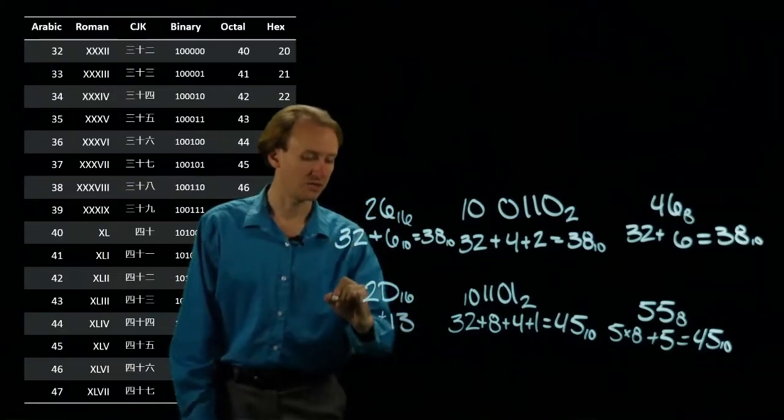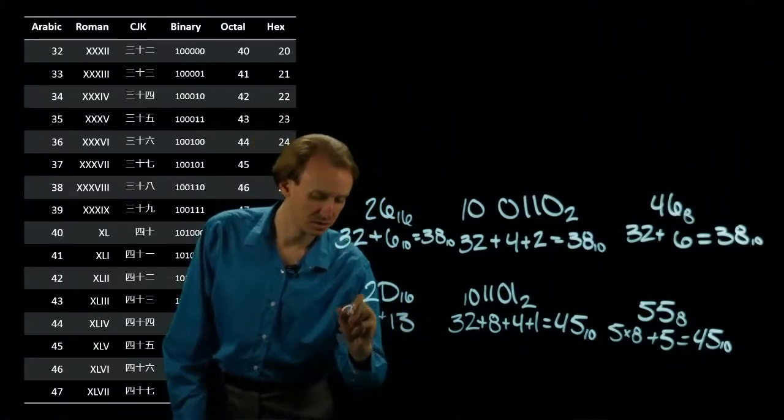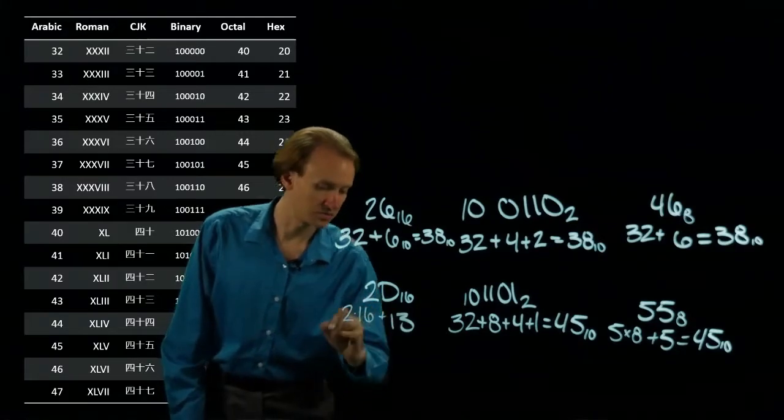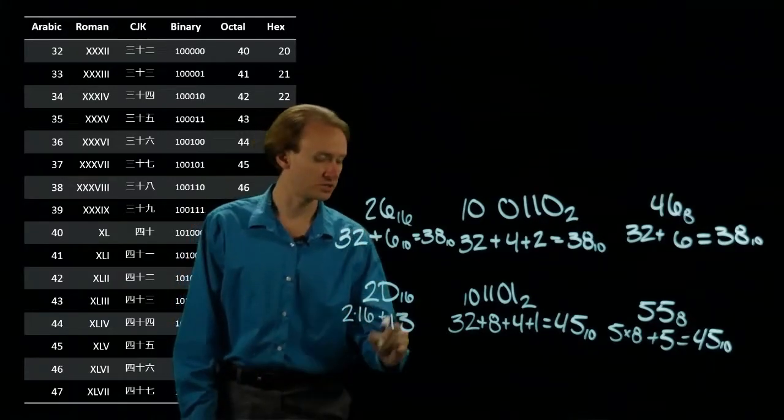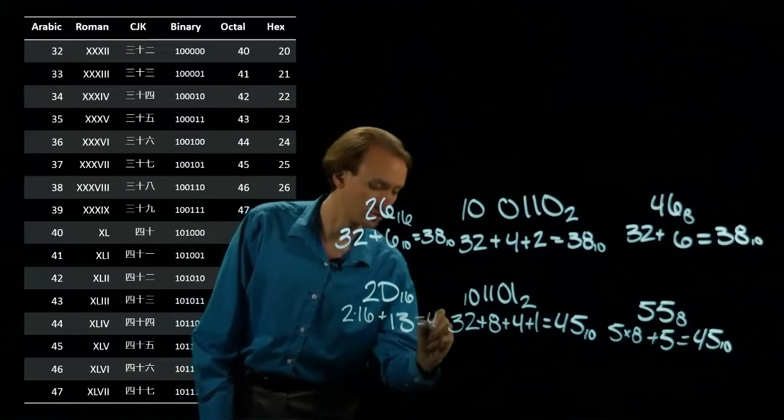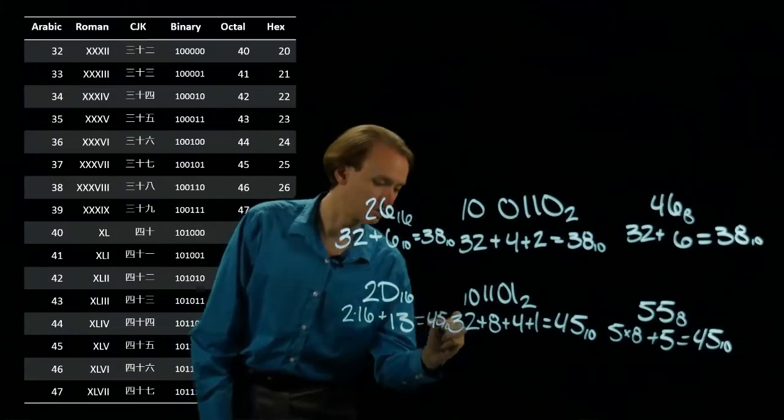Then I have 2 times 16, which gives me 32. 32 plus 13 equals 45 in base 10.